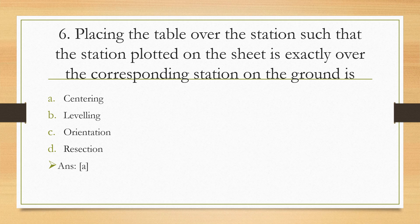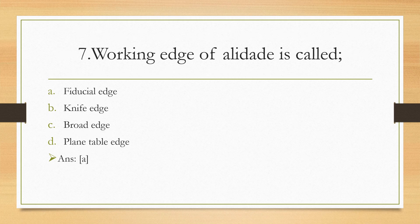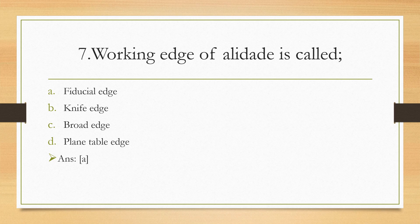Next question: Placing the table over the station such that the station plotted on the sheet is exactly over the corresponding station on the ground is called: centering, leveling, orientation, or resection? And the right answer is centering.